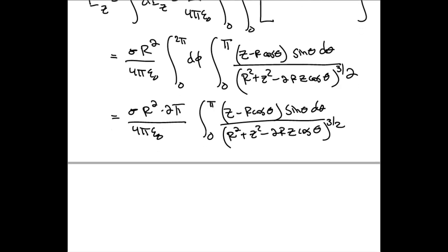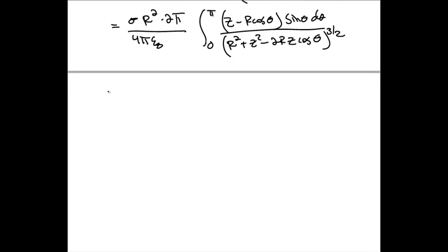We can put this in a slightly nicer form by making a u substitution by setting u as cosine theta so that du is minus sine theta d theta, and then our integral.